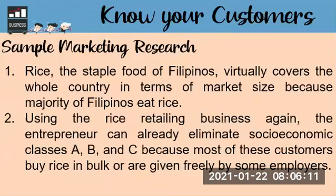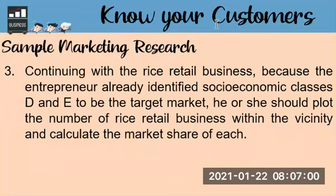For step two, we eliminate the customers who are probably unlikely to buy the product. The business here is a rice retailing business. Using that, the entrepreneur can already eliminate socioeconomic classes A, B, and C, because most of these customers buy rice in bulk or are given rice freely by some employers. So classes A, B, and C are removed since they do not buy retail rice — instead they buy per sack, or rice is given to them by their employers.